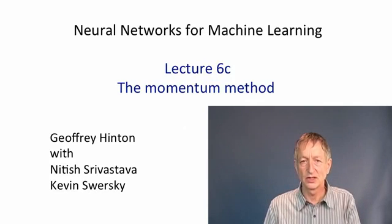In this video, we're going to look at the momentum method for improving the learning speed when doing gradient descent in a neural network. The momentum method can be applied to full batch learning, but it also works for mini-batch learning. It's very widely used, and probably the commonest recipe for learning big neural nets is to use stochastic gradient descent with mini-batches combined with momentum.